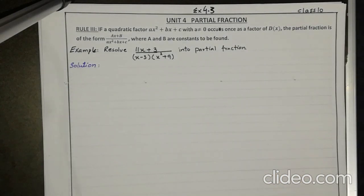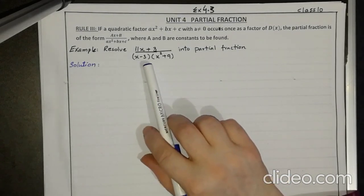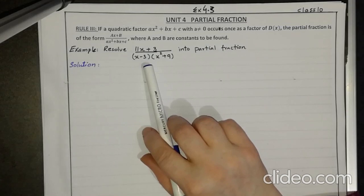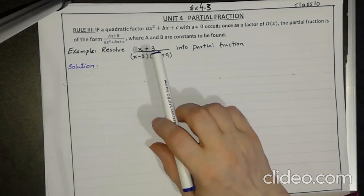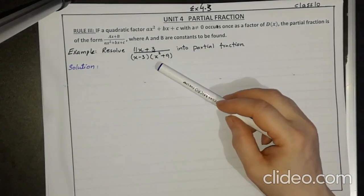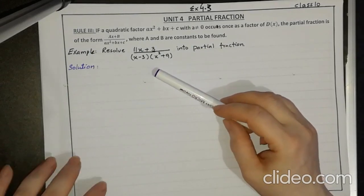Before starting the question, you should know the definition of proper and improper fractions, which you already learned in the previous video. A proper fraction is when the degree of the numerator is smaller than the degree of the denominator. An improper fraction is when the degree of the numerator is equal to or greater than the denominator. Here, x times x² gives x³, and the numerator has degree 1, so it is a proper fraction. If it were improper, you would first divide before decomposing.